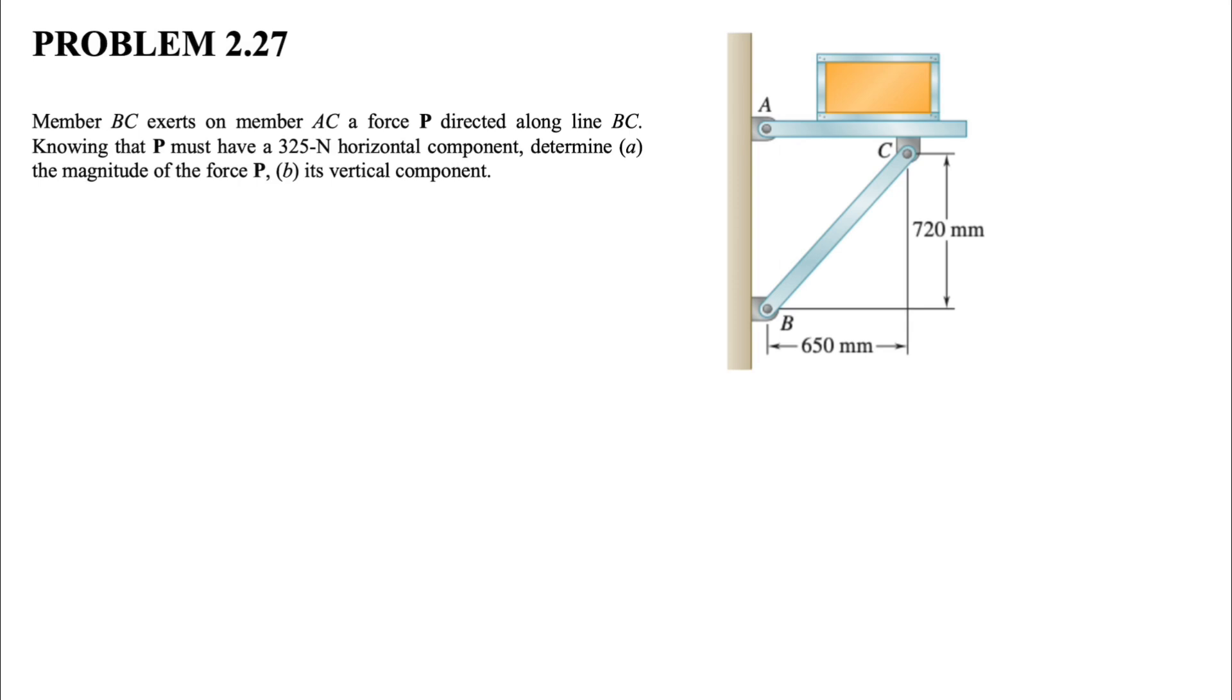We have member BC that exerts on member AC a force P directed along line BC. We know that P must have a horizontal force of 325 Newton. In part A of the question, we need to find the magnitude of the force P. And in part B, we need to find the vertical component.